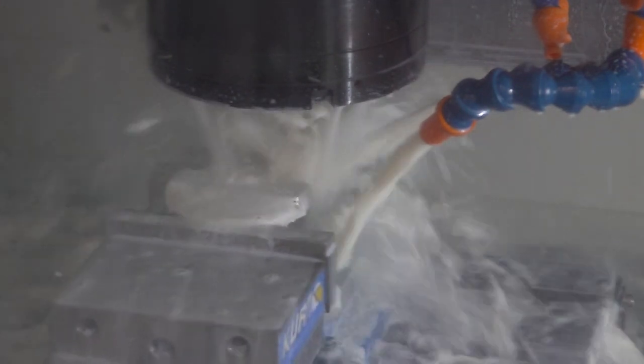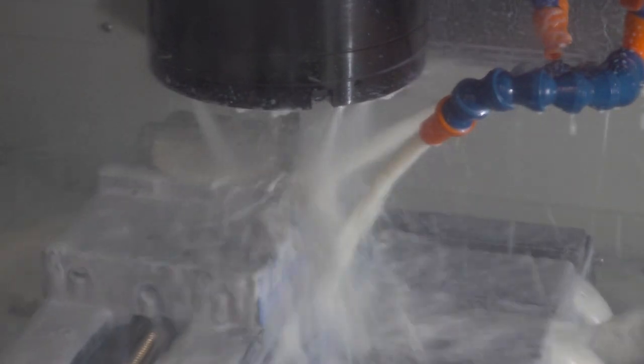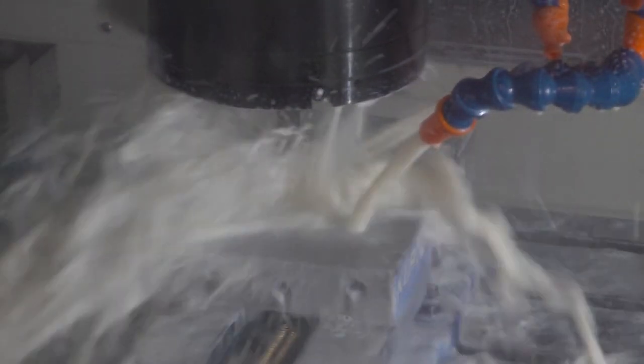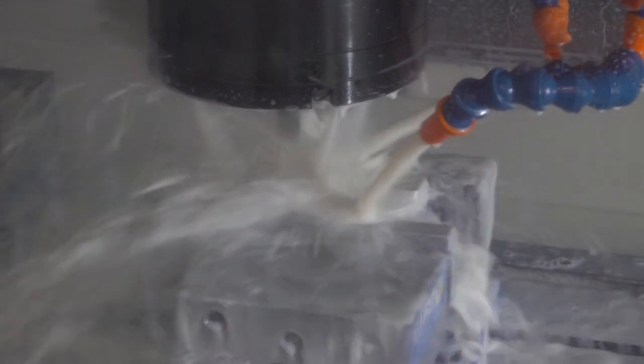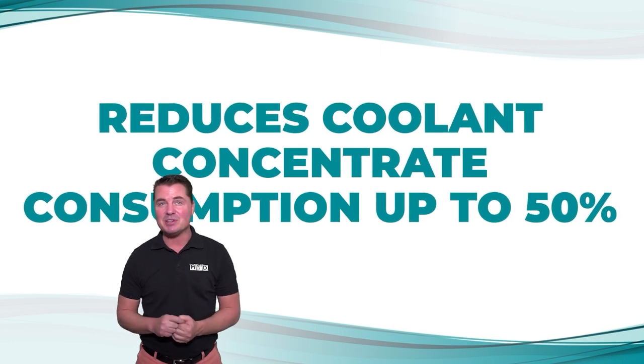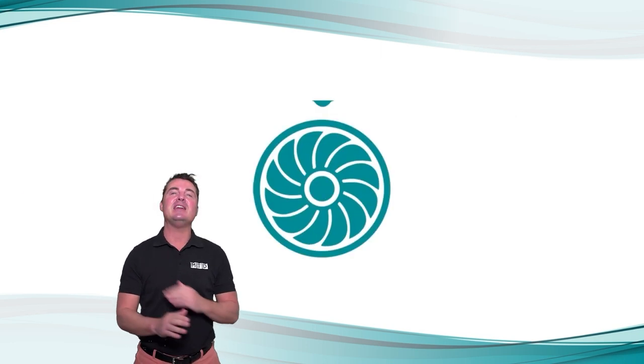In one case, an HVAC manufacturer saved over $14,000 a year just by switching to TRIM MicroCut 69T2XT. The customer cut their coolant makeup rate by 50% and reduced the cost to produce each part by more than 8%.